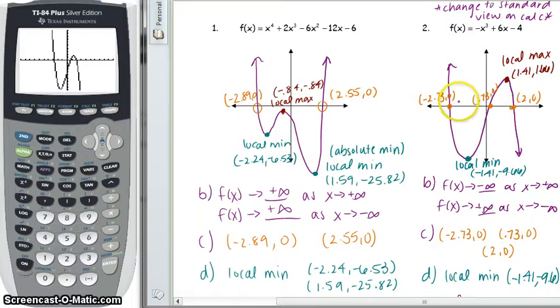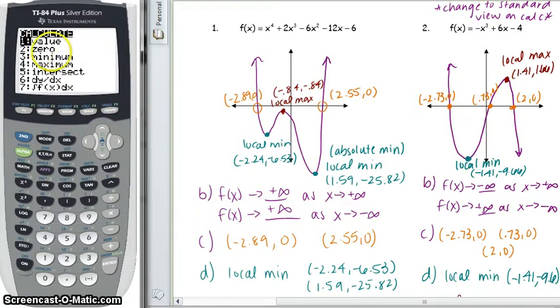Then to find your x intercepts, remember we needed to use our zero function of our calculator. And as a reminder, to find that you go to second, trace, and it's this second option here, zero. So when we do that we can find each of these points and make sure we label them on our graph. Those are our x intercepts.